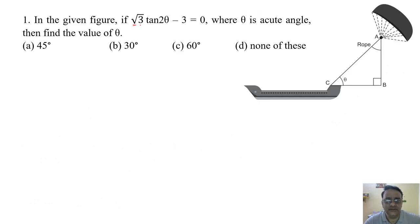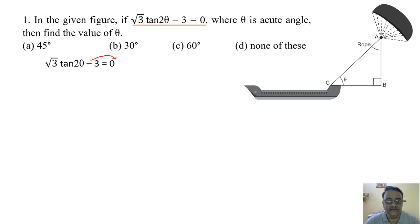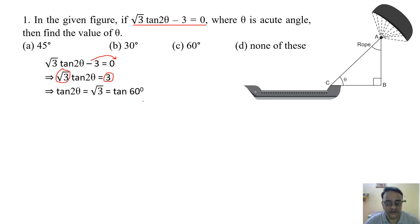Question 1: If √3 tan 2θ − 3 = 0, where θ is acute, find θ. Shifting −3 to the other side gives 3/√3 = √3, so tan 2θ = √3. Since tan 60° = √3, we get 2θ = 60°, therefore θ = 30 degrees. The correct option is option B.